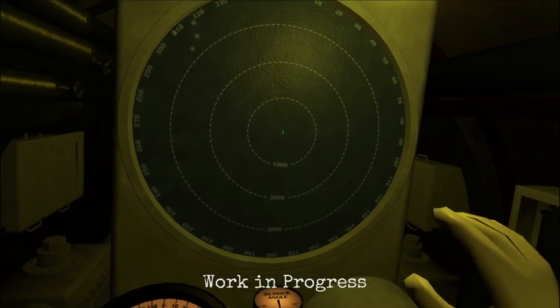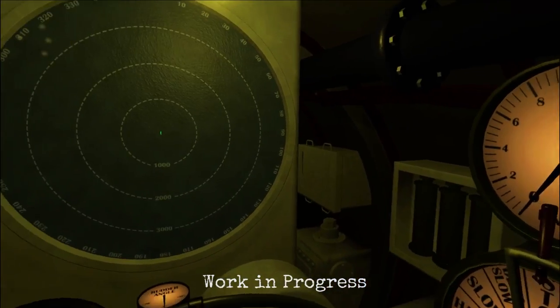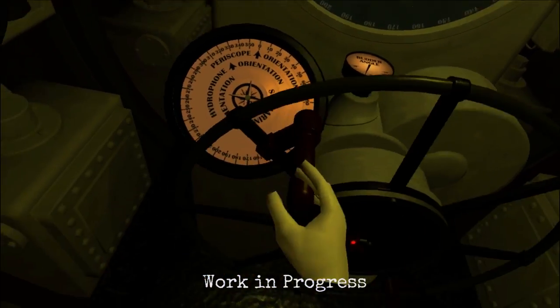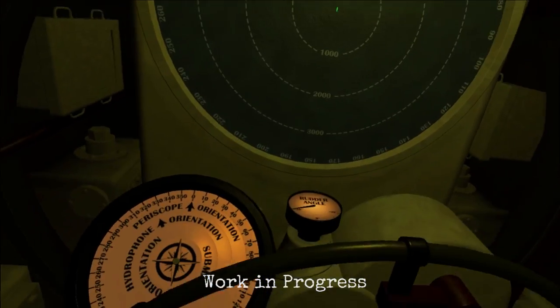Now I just need to steer the boat and intercept the convoy to attack it. This is the rudder wheel, which you can use to steer the submarine. By default it controls the main rudder directly, which you can see on the rudder angle dial.